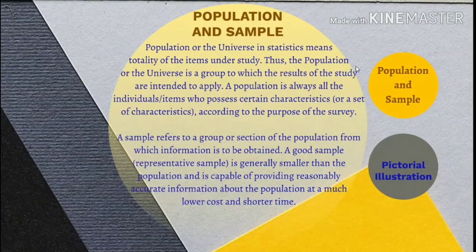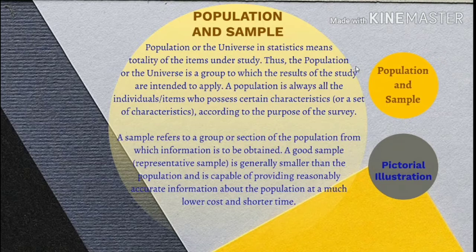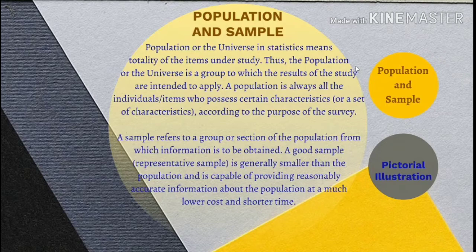Collection, Population, and Sample: population or the universe in statistics means the totality of the items in the study. The population or the universe is a group to which the results of the study are intended to apply. A sample refers to a group or section of the population from which information is to be obtained. A good sample is a so-called representative sample. It is generally smaller than the population and is capable of providing reasonably accurate information about the population at a much lower cost and in a shorter time.